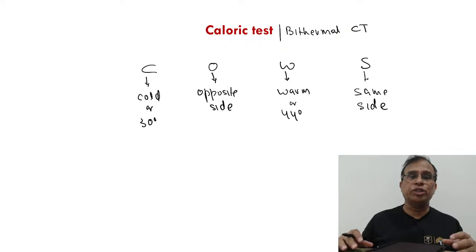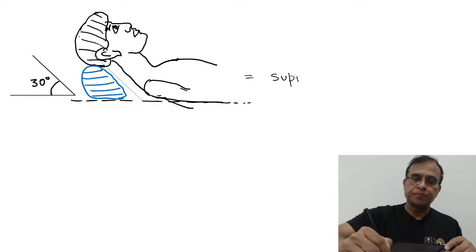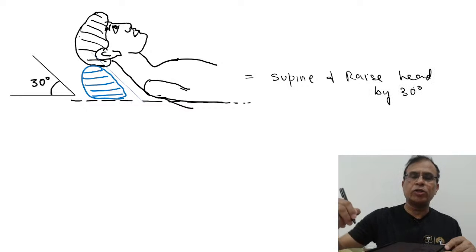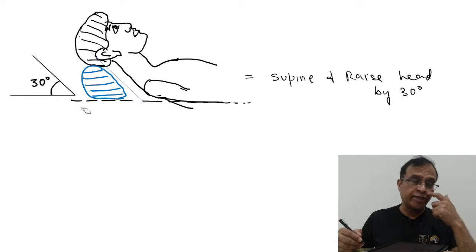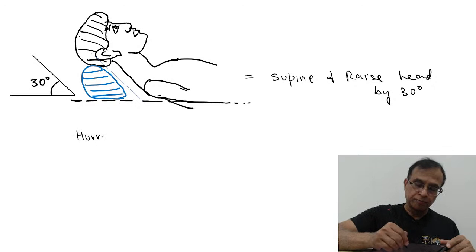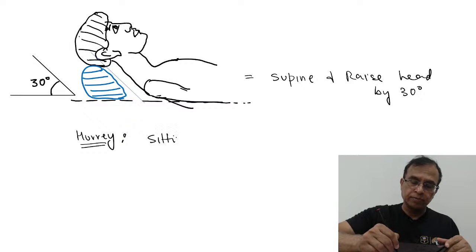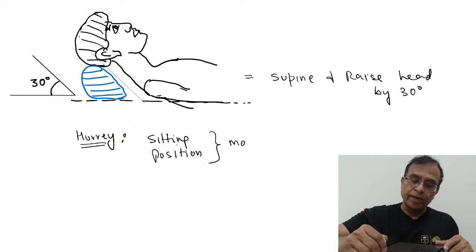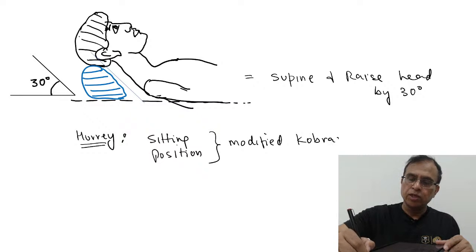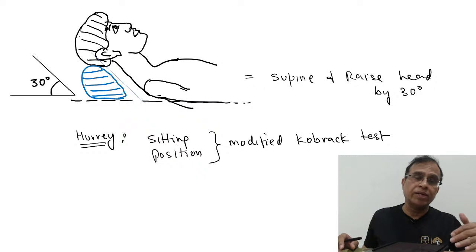This test is done in a particular position. The position of the patient during the caloric test is supine with the head raised by 30 degrees. The patient lies supine and you create an angle of 30 degrees with the floor. If you are in a hurry and do not have time to position the patient properly, you can do the test in sitting position. If you do the caloric test in a sitting position, the name is different - it is called the modified Cobrak test. The position of the patient is different but it is the same test.